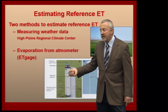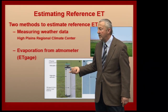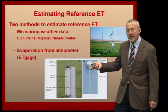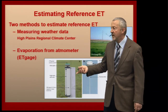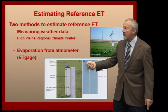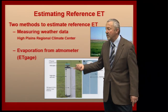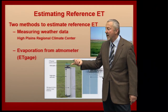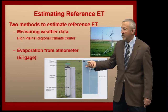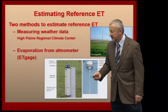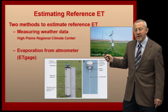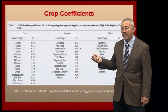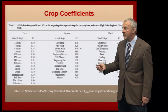These ET gauges are relatively inexpensive — a little over $200. They're useful for an area that might be six or seven miles square away from the installation. Both the weather station network and the atmometer will give you the same reference crop ET number based on the environmental conditions out in the field each day.